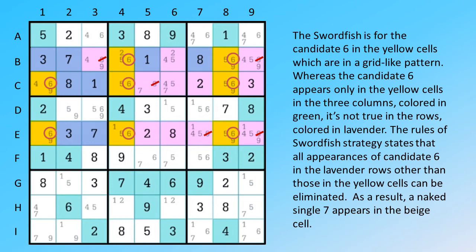As a result, a naked single 7 appears in the beige cell. As we fill the single, more singles will appear. The process of more singles appearing after singles are filled will eventually take us to the final solution.